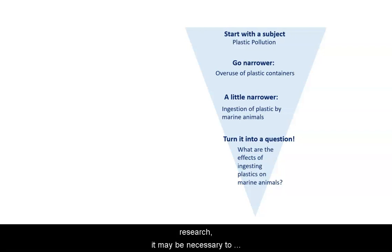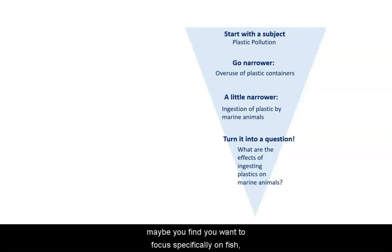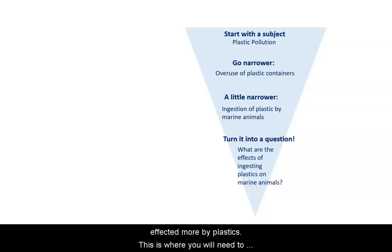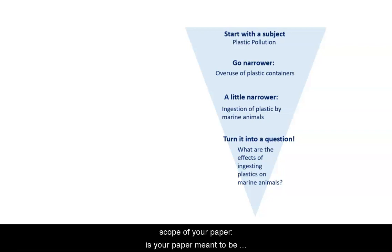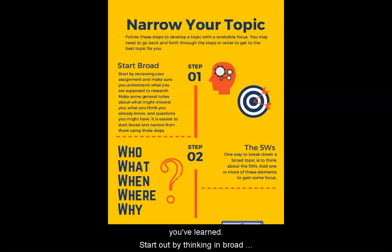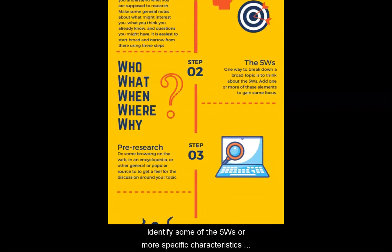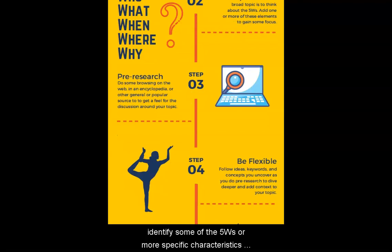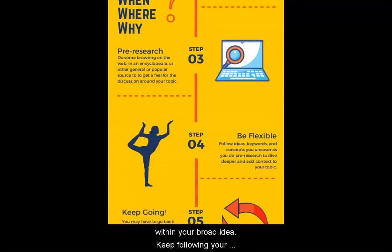One thing to note as you get deeper into research: it may be necessary to narrow your topic a bit more. For example, maybe you find you want to focus specifically on fish, or want to focus on a geographic area that is affected more by plastics. This is where you will need to be flexible based on the information you find and the scope of your paper — is your paper meant to be one page or ten pages? Follow the steps in this infographic to recap what you've learned. Start out by thinking in broad terms. Do some pre-research to identify some of the five W's or more specific characteristics within your broad topic. Keep following your pre-research until you have a workable topic.